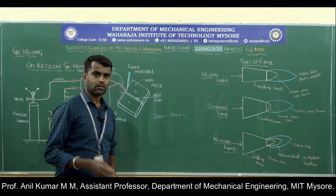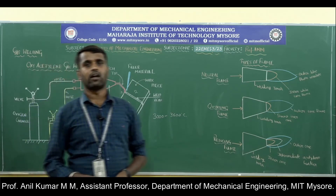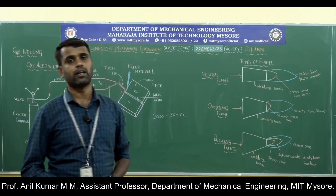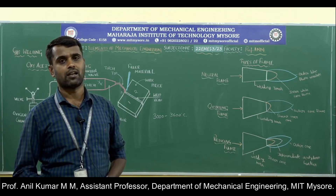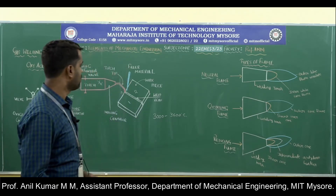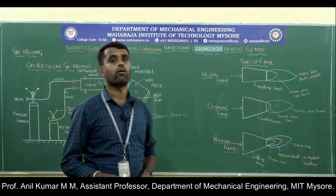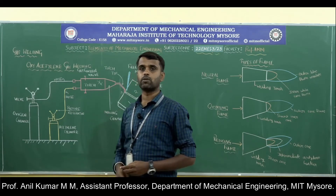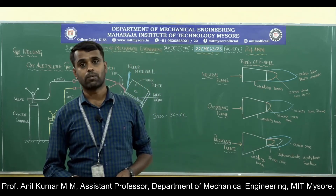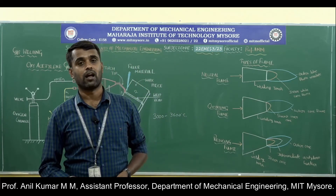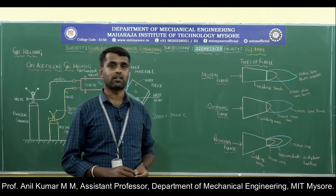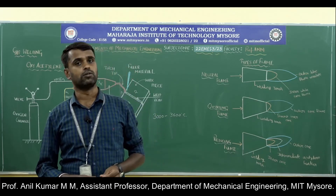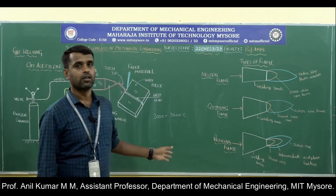Coming to the disadvantages: acetylene gas is costly, and precautions must be taken because acetylene gas is highly explosive — care must be taken while handling, storing, and during welding. This process is not suitable for thick workpieces or high melting point alloys; it is only suitable for thin workpiece material. Refractory materials like tungsten and molybdenum, and reactive materials like thorium, are difficult to weld using the gas welding process.